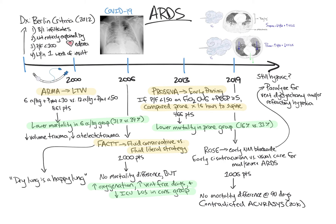To recap, the ROSE trial assessed early neuromuscular blockade and found no mortality difference. Therefore, paralysis is now utilized to manage dyssynchrony and/or refractory hypoxia.